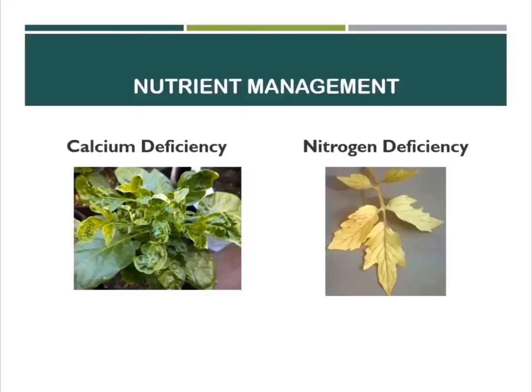The nitrogen deficiency causes the old grown leaves to turn yellow and wilted, while the new growth appears light green.